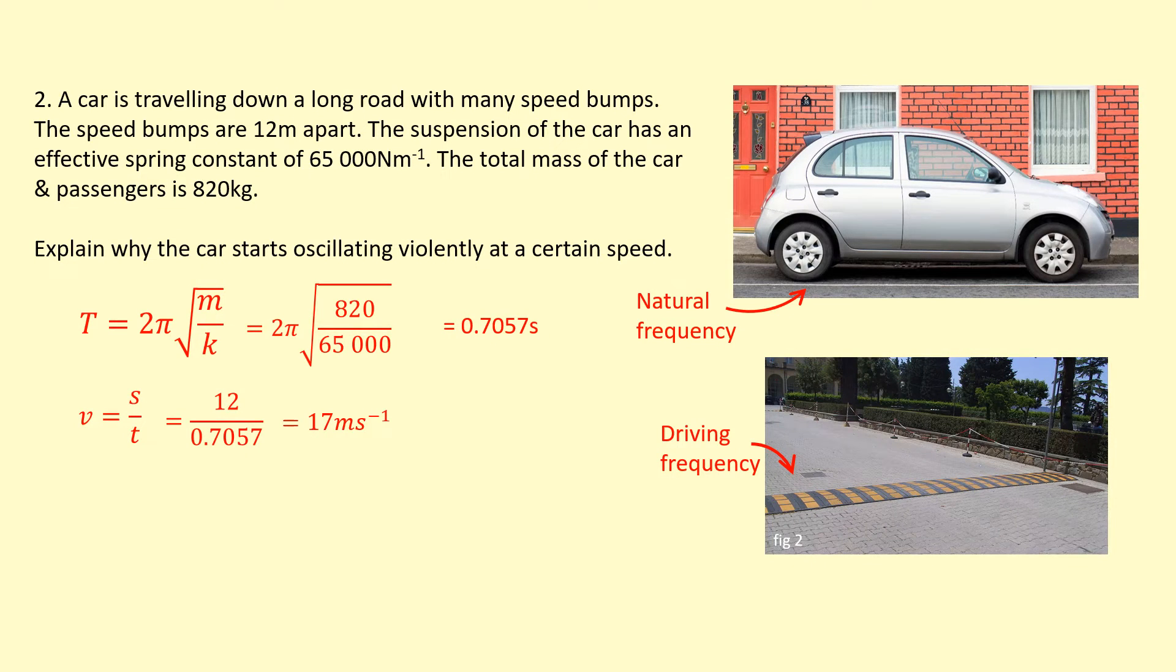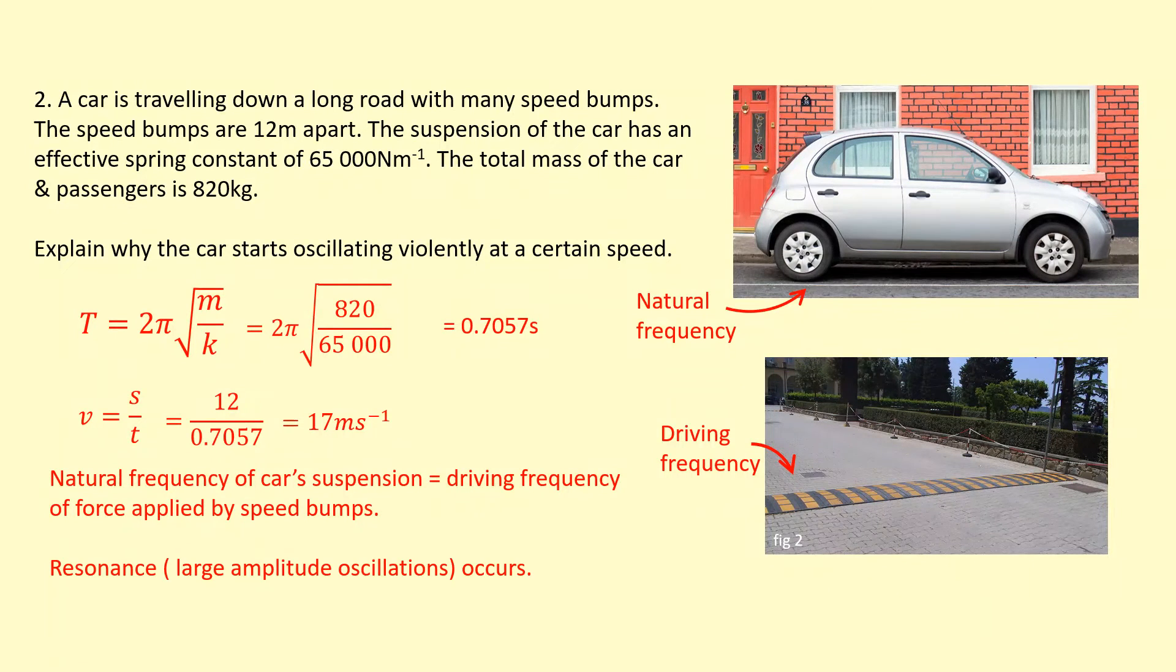If it was slower than that, the car will shake only a bit. If it was faster than this, again the car won't shake too much. But at 17 meters per second, the natural frequency equals the driving frequency of the applied force by the speed bump, and you get resonance and large amplitude oscillations.